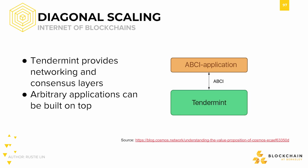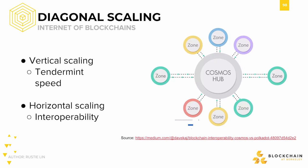The idea is to connect blockchains together to become an internet of blockchains. Blockchains in the Cosmos network would be diagonally scaled. We can achieve vertical scaling by the speed of Tendermint BFT consensus, and horizontal scaling by the interoperability of the Cosmos network itself.